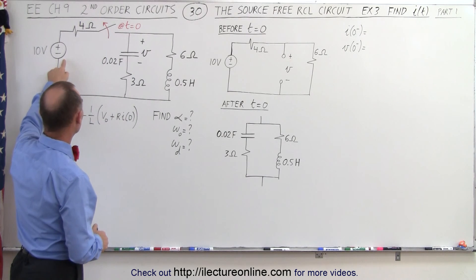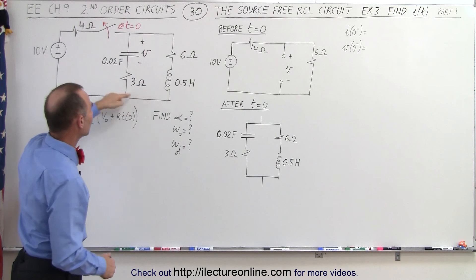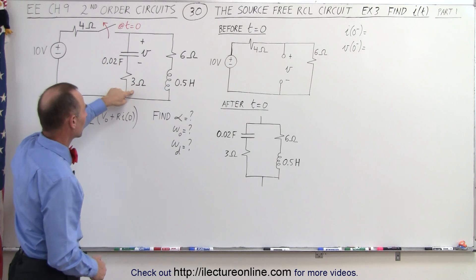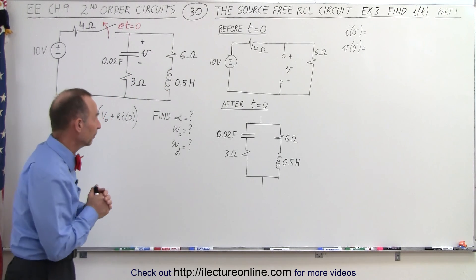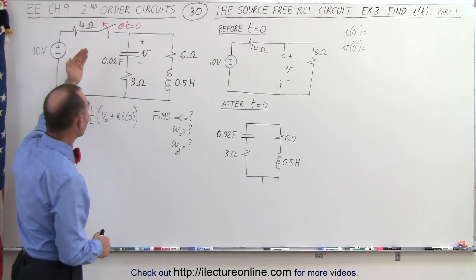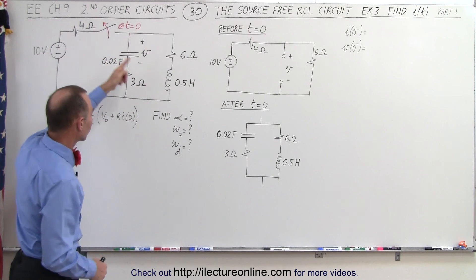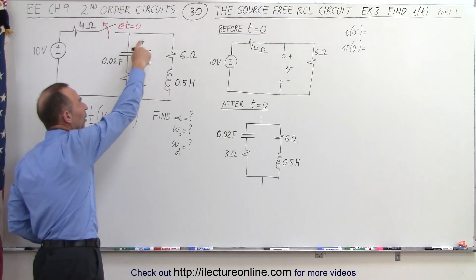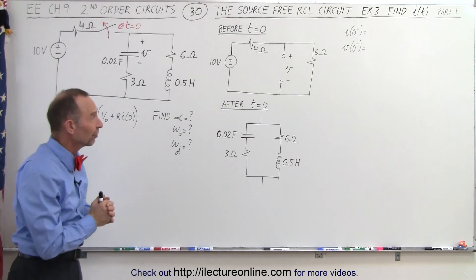We have a circuit here with a 10 volt source, a 4 ohm resistor, and then two parallel branches: one with a 0.02 farad capacitor, and the other with a 3 ohm resistor, a 6 ohm resistor, and a 0.5 henry inductor. Notice that the switch opens at time equals 0, so we first have an initial current going to the circuit, then the switch opens and this becomes a source-free RLC circuit that we have to determine the current for as a function of time.